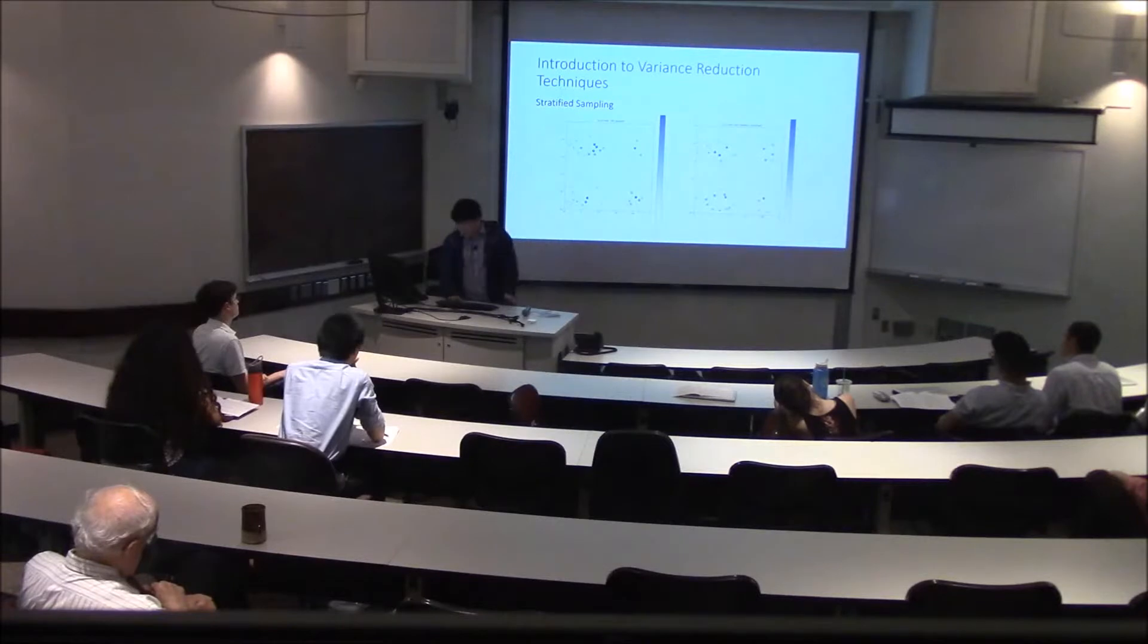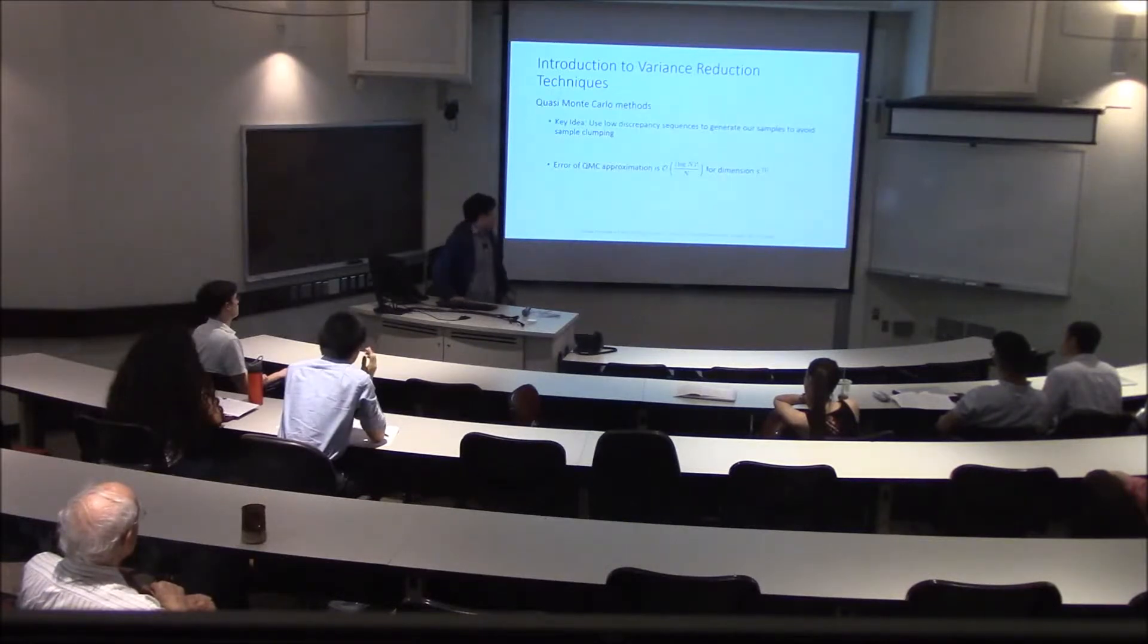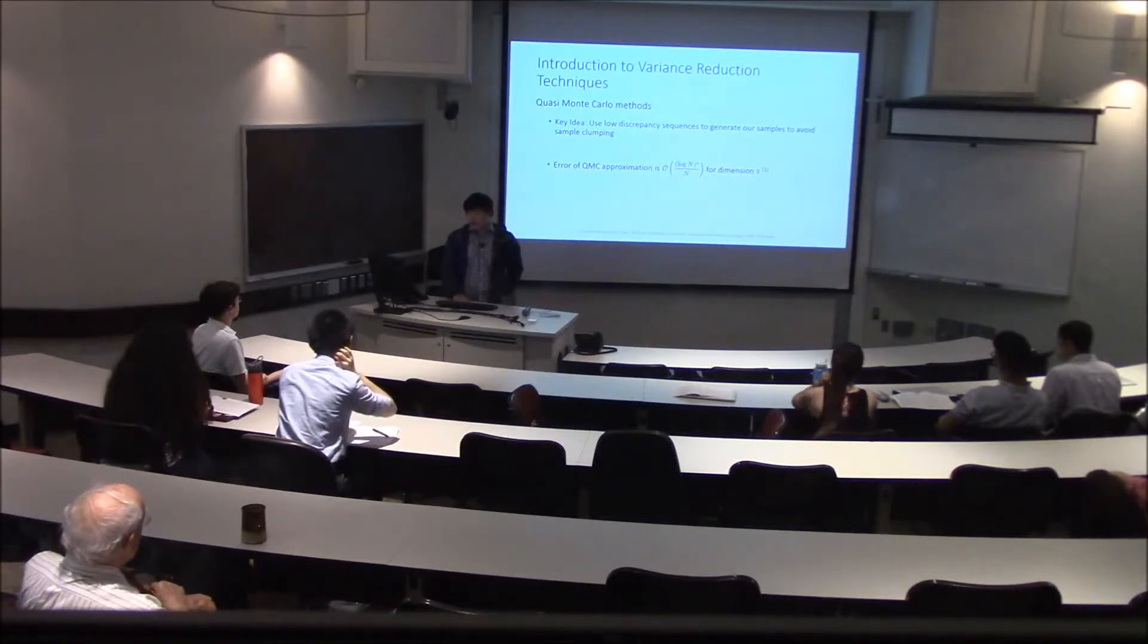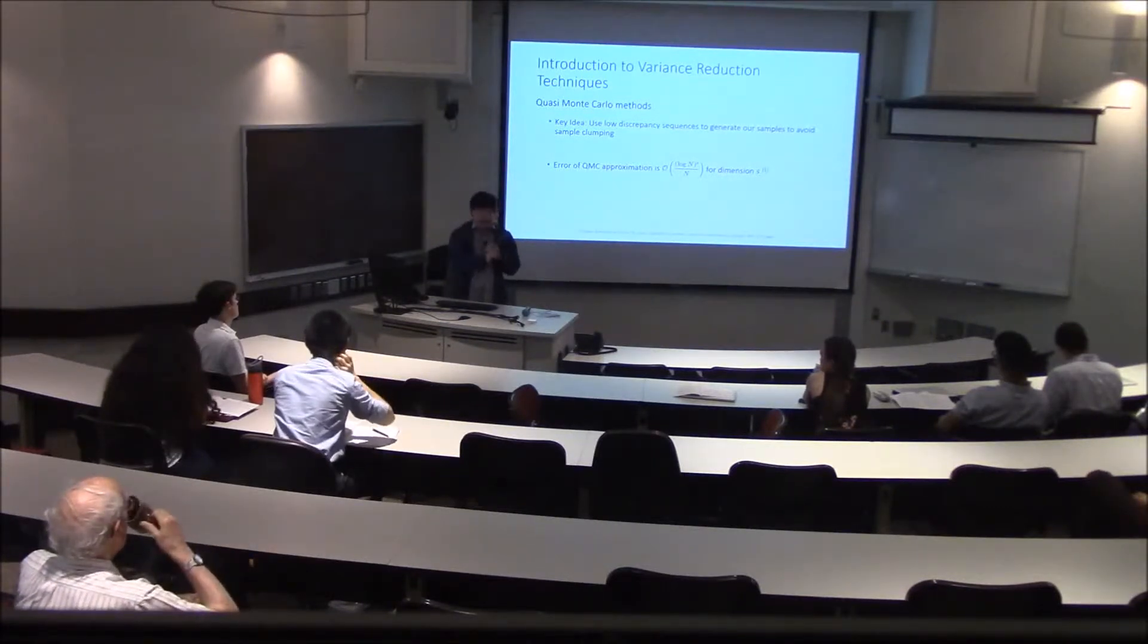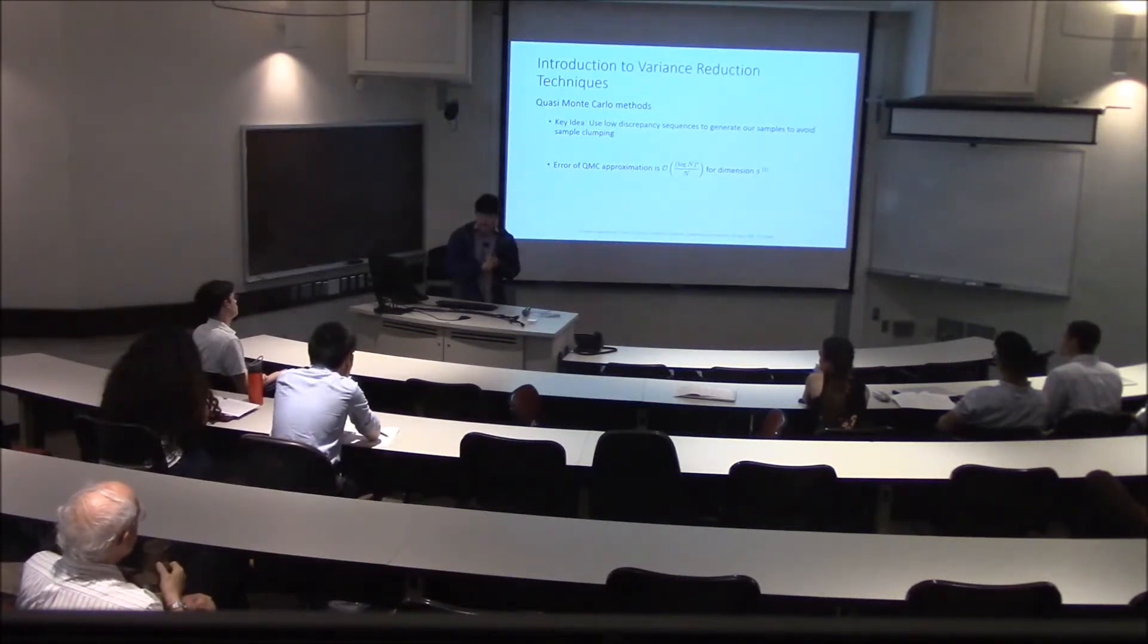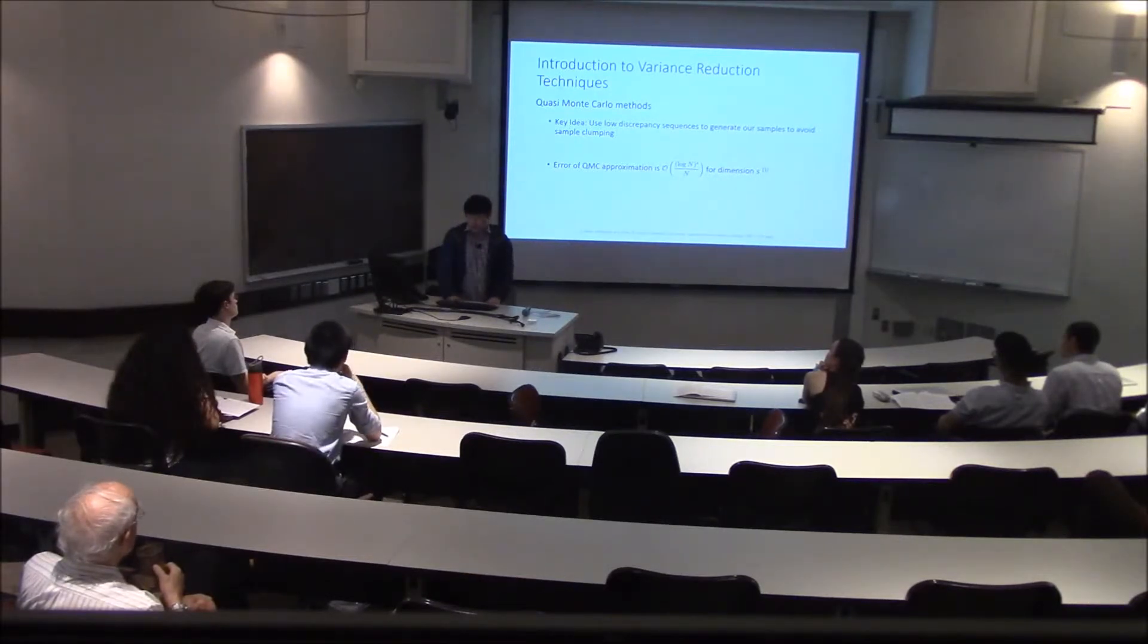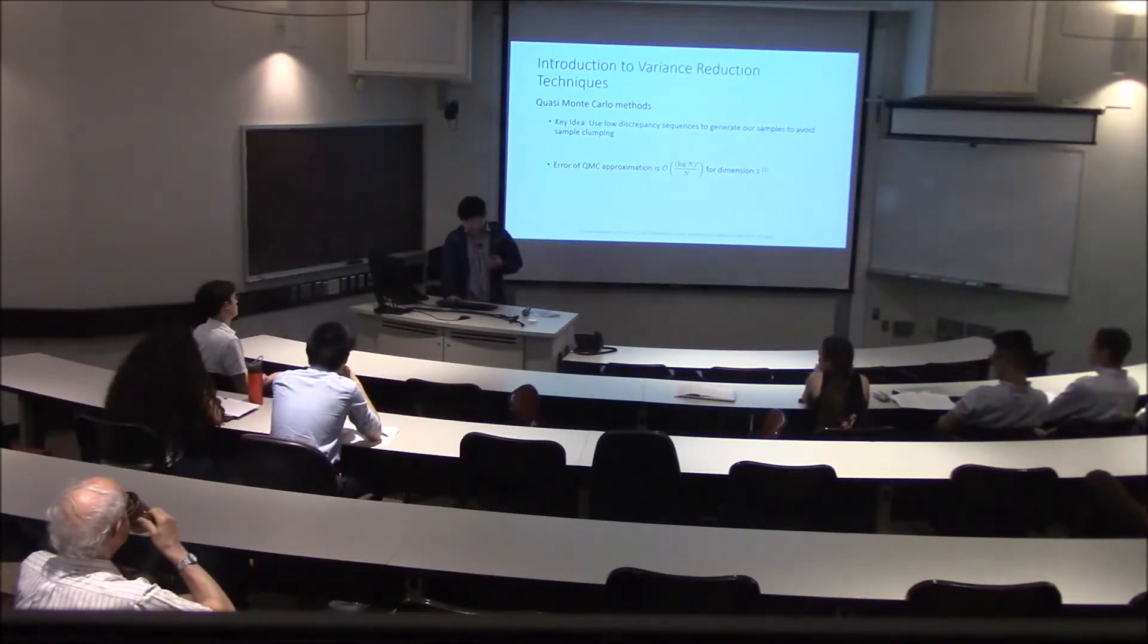The fourth one is quasi Monte Carlo methods. It's a little bit different from the rest because we're not pulling from a random distribution, but instead we'll be using a low discrepancy sequence, which are essentially deterministic sequences that have behavior of random variables. Generating these usually involves getting prime numbers and different bases. A few famous ones are the Halton sequence or the Hammersley sequence. It was shown that the rate of convergence is log n to the s power over n for some dimension s and n samples. In order for this to be really effective we need a high number of n and a fairly low dimension s.